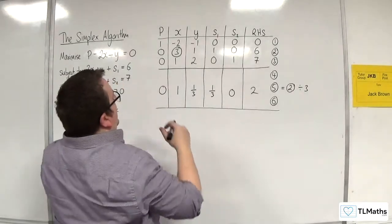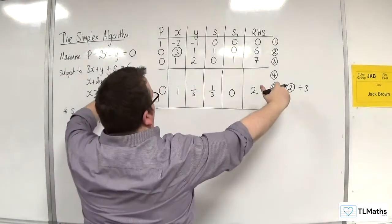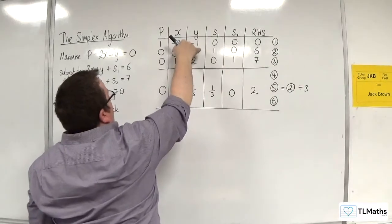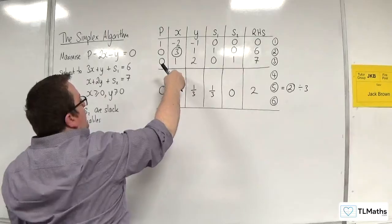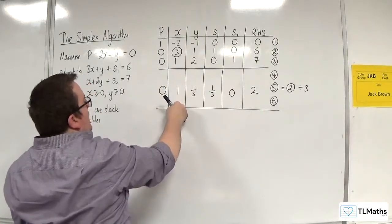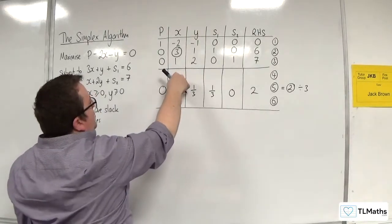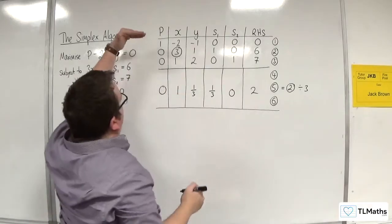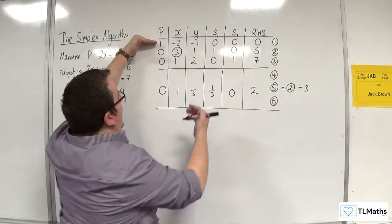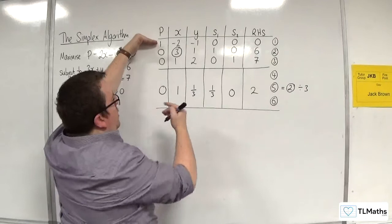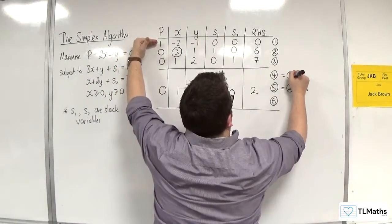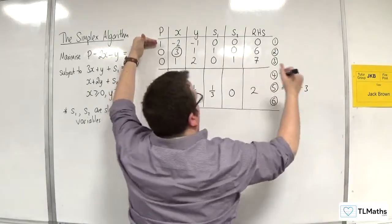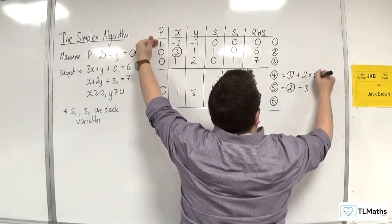So once I've got that, I'm going to use that row to eliminate and get 0s here and here. So I'm going to end up with a 0 here and a 0 here. So in order to get 0 here, what I'm going to have to do is get equation 1 and add on 2 lots of equation 5. So equation 4 will be equation 1 plus 2 lots of equation 5.